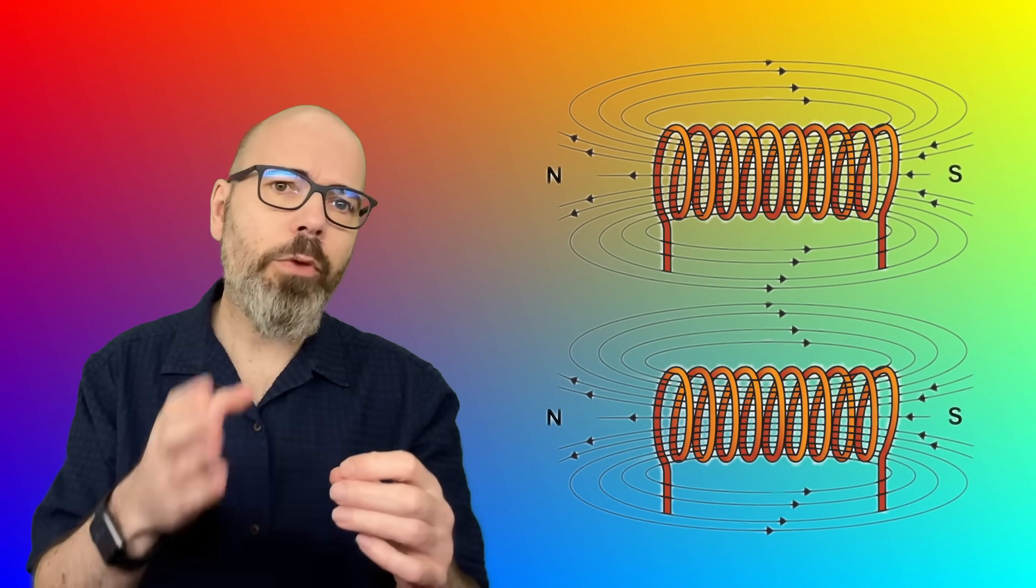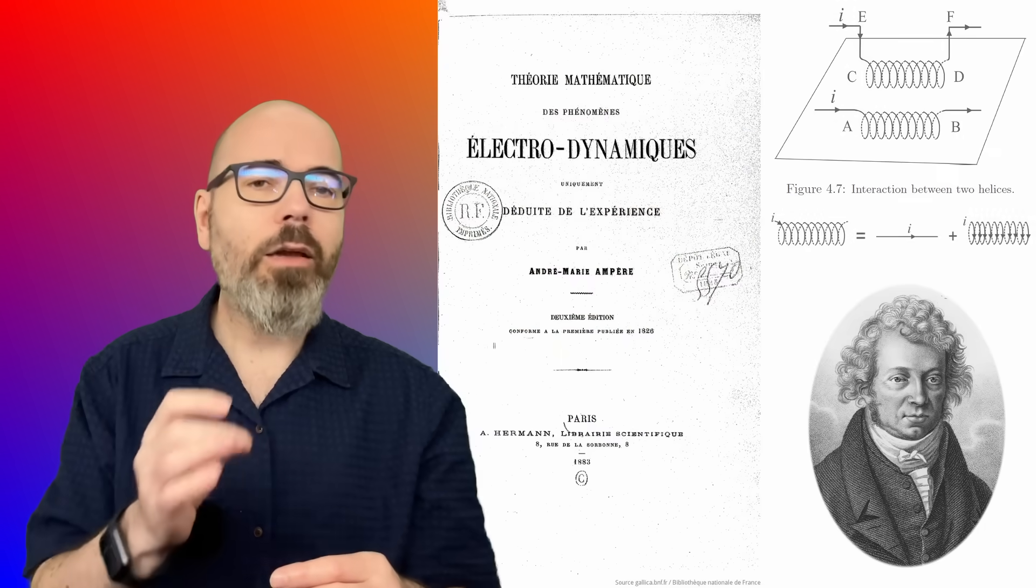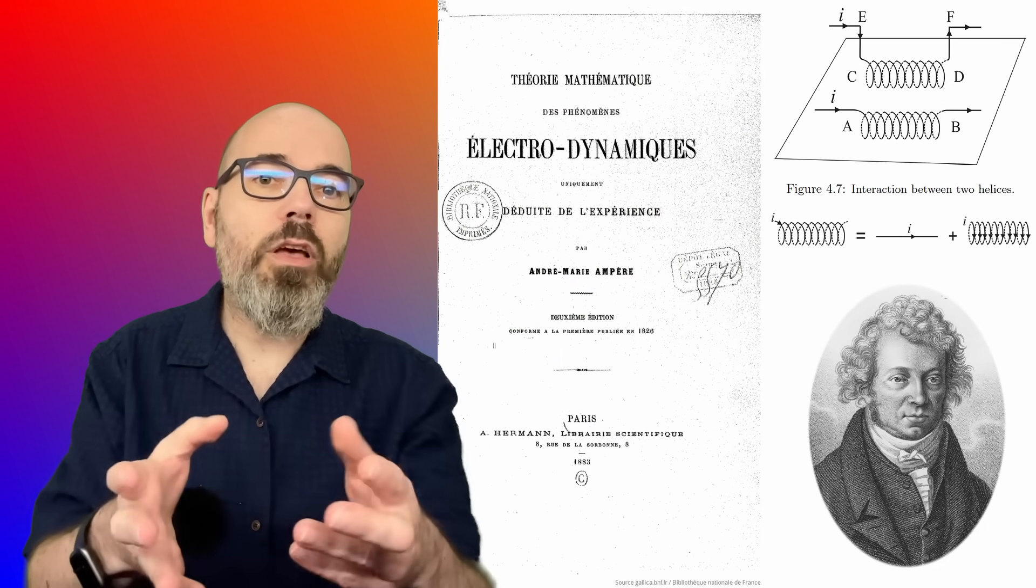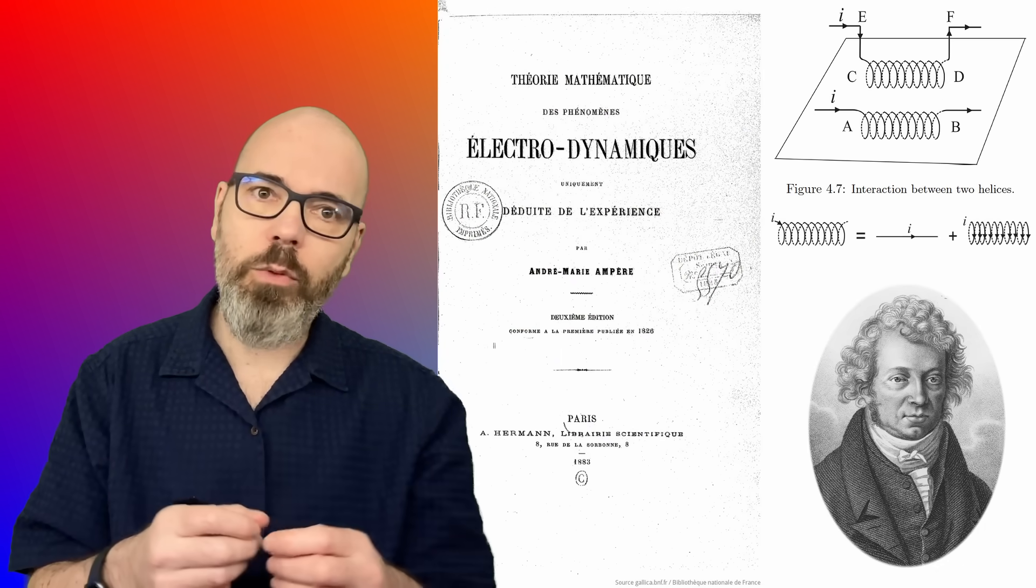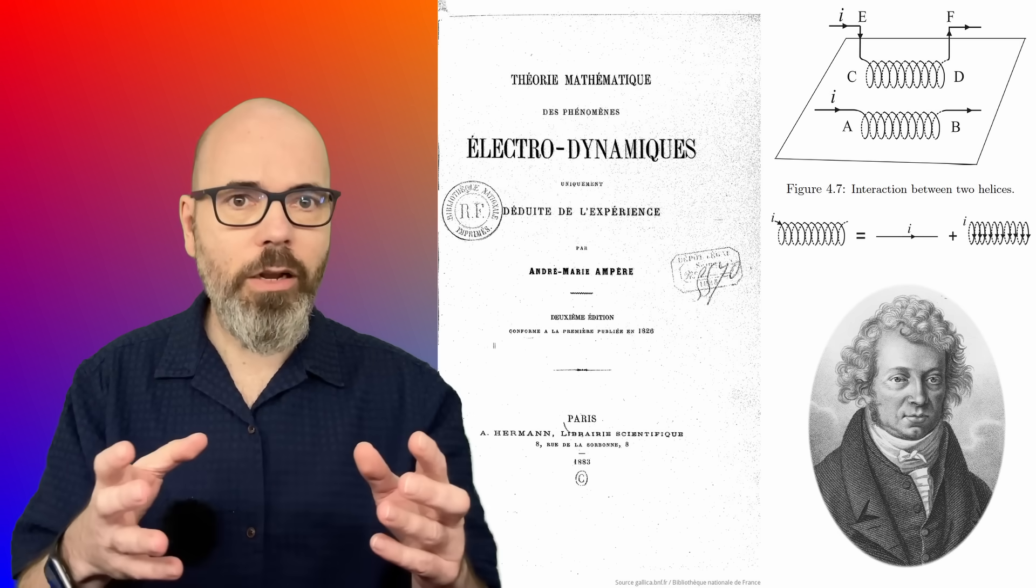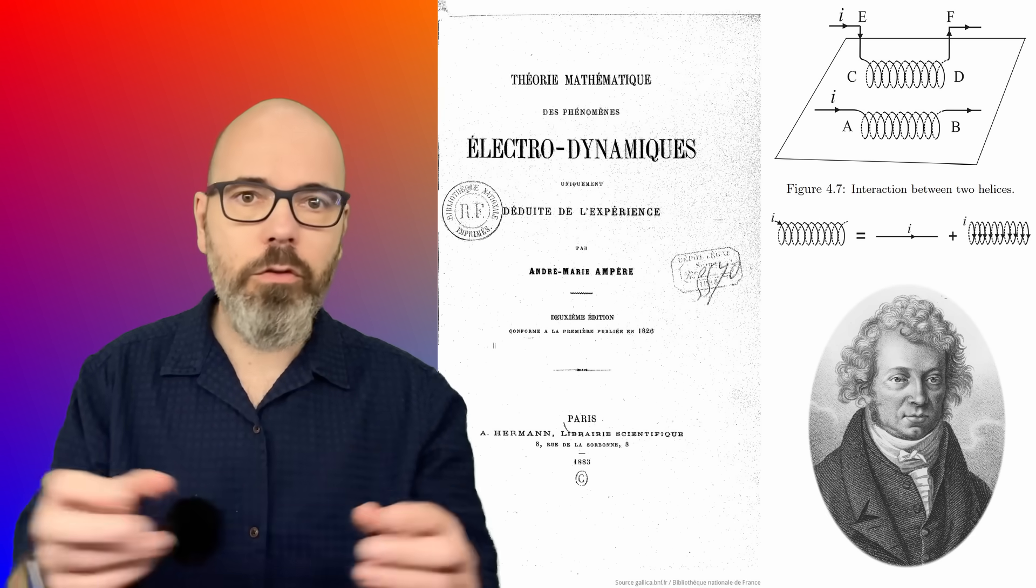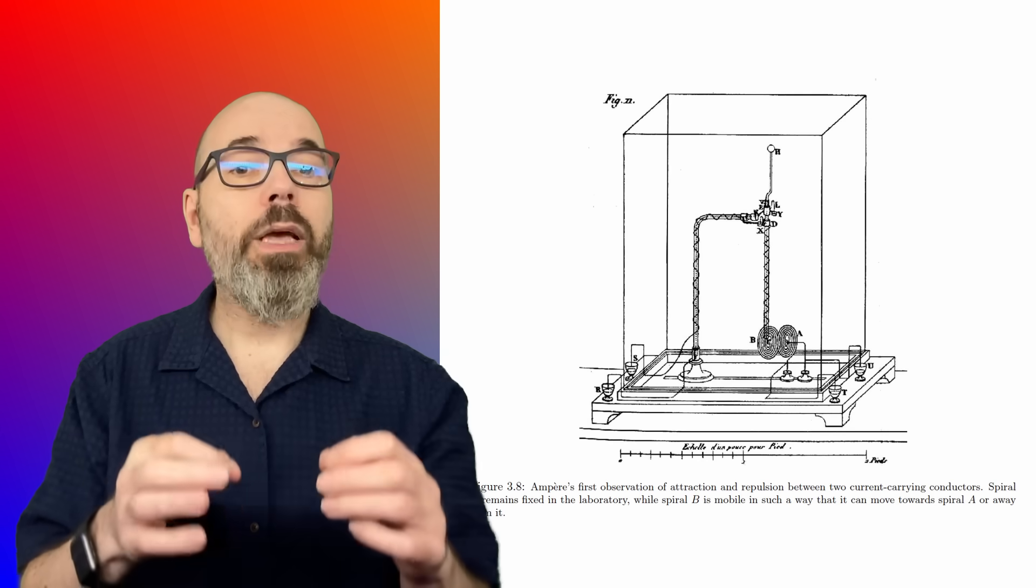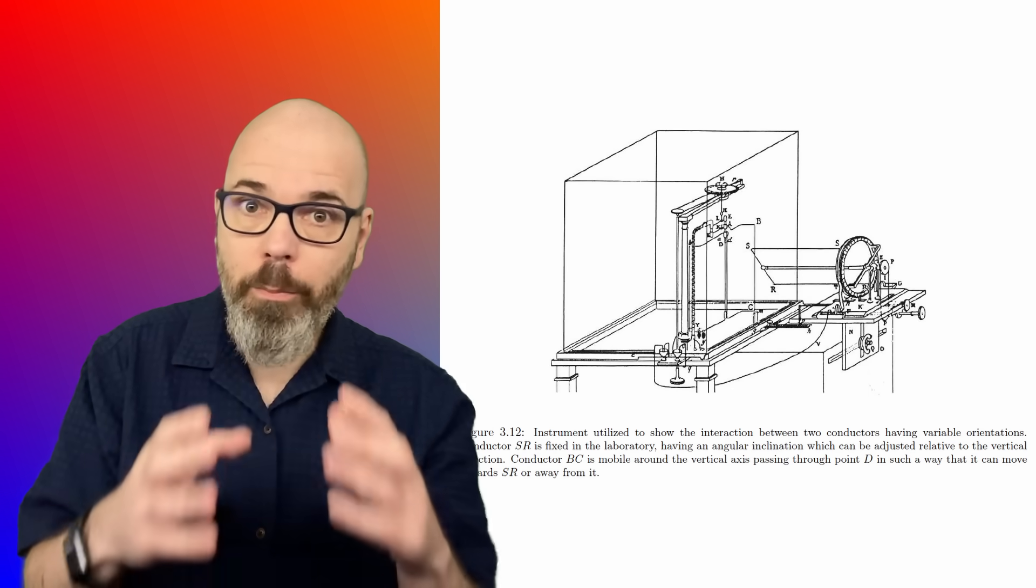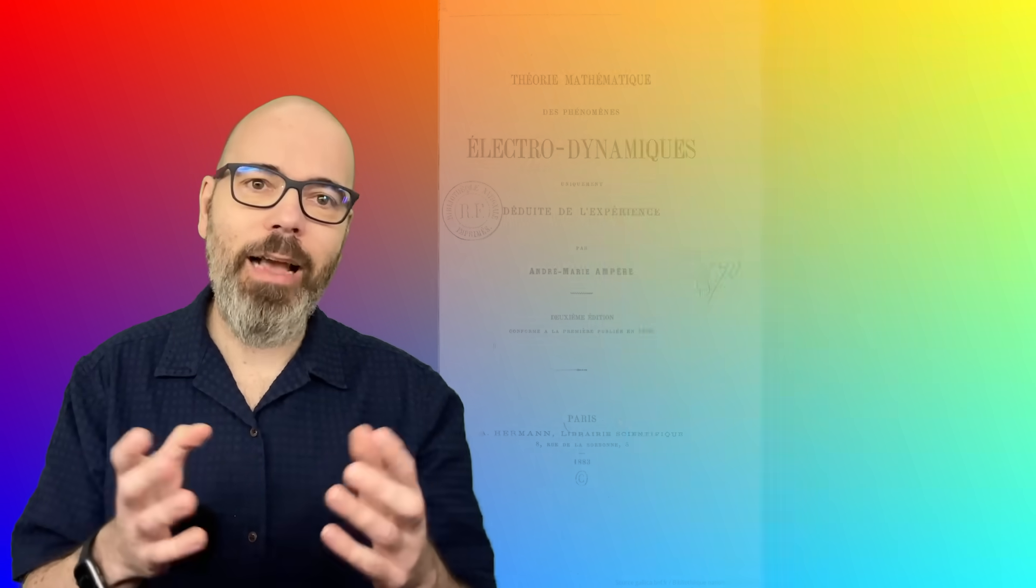And it's not something most textbooks ever mention. But 200 years ago, André-Marie Ampère uncovered this exact behaviour. He didn't just observe it. He built a theory to explain it. A law that treated electric currents as real physical entities interacting directly with one another. Not through fields, but through force. And yet, that's exactly what we did.